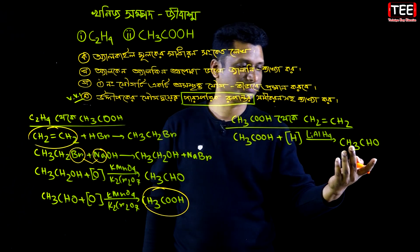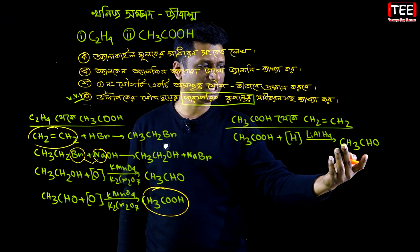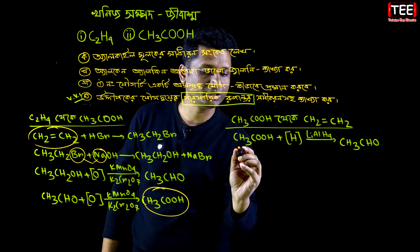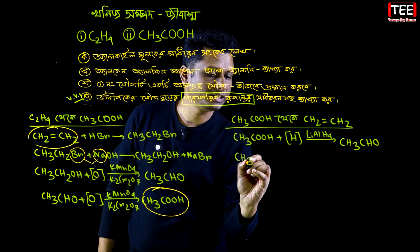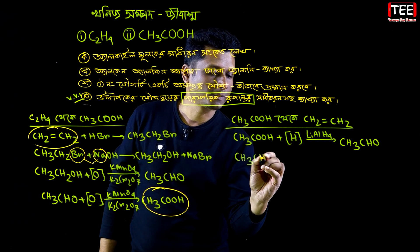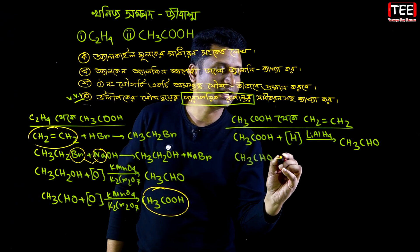CH₃COOH can be reduced using LiAlH₄, which is called Lithium Tetrahydroaluminate (Lithium Aluminium Hydride). This gives Ethanol — CH₃CH₂OH.